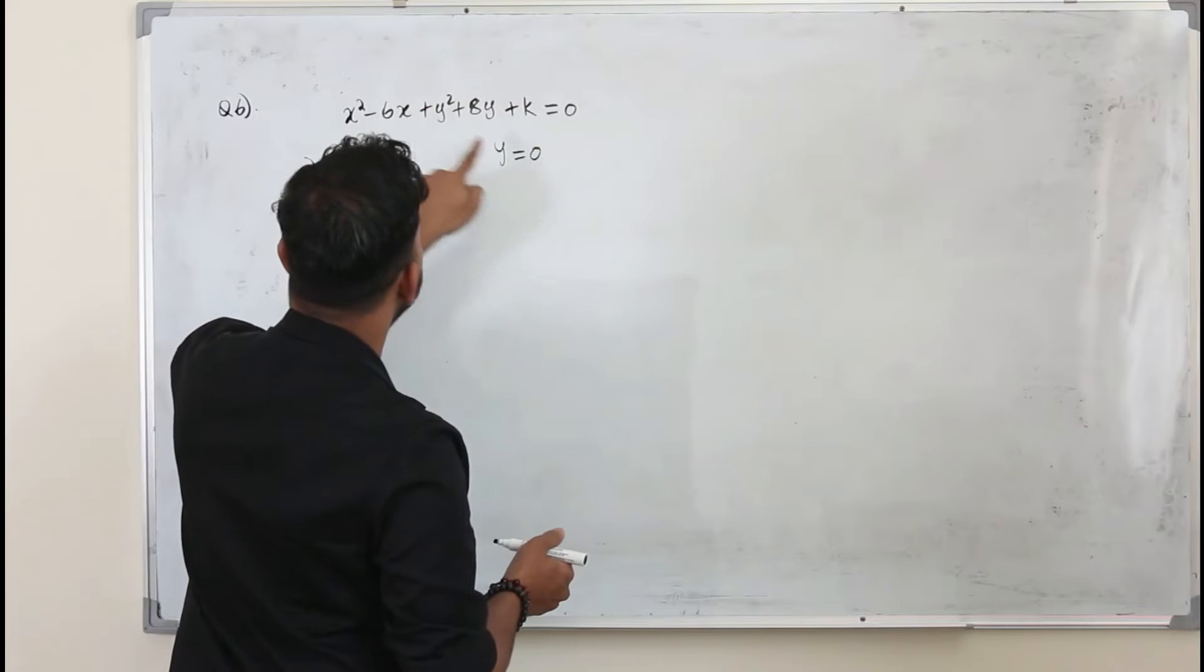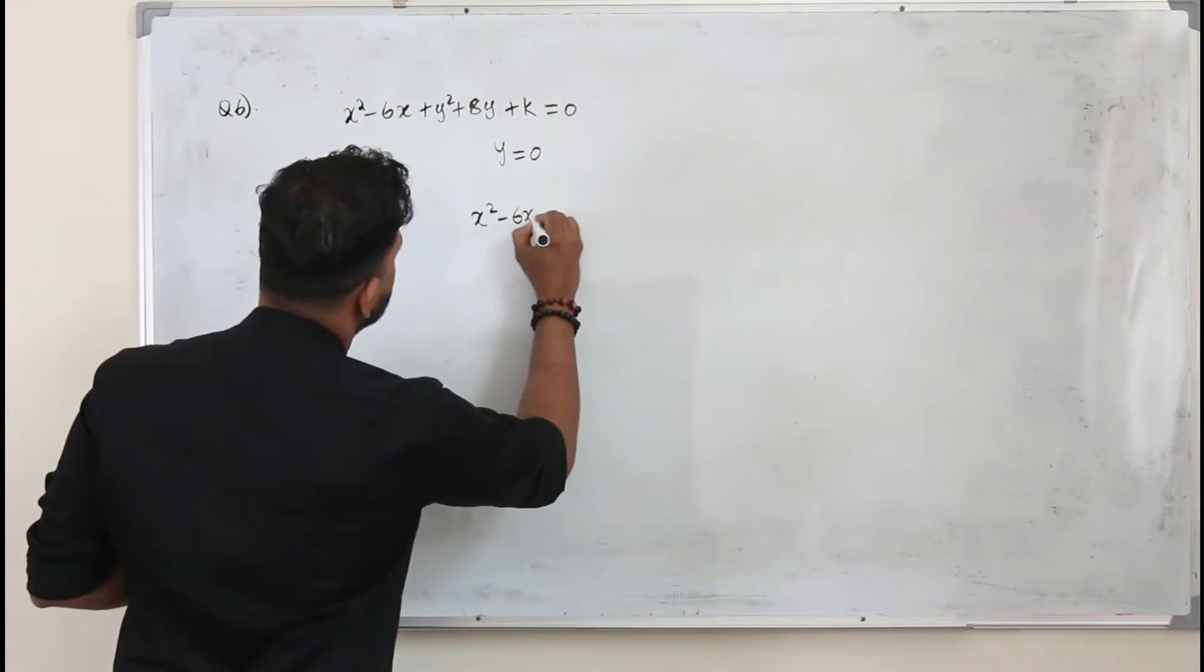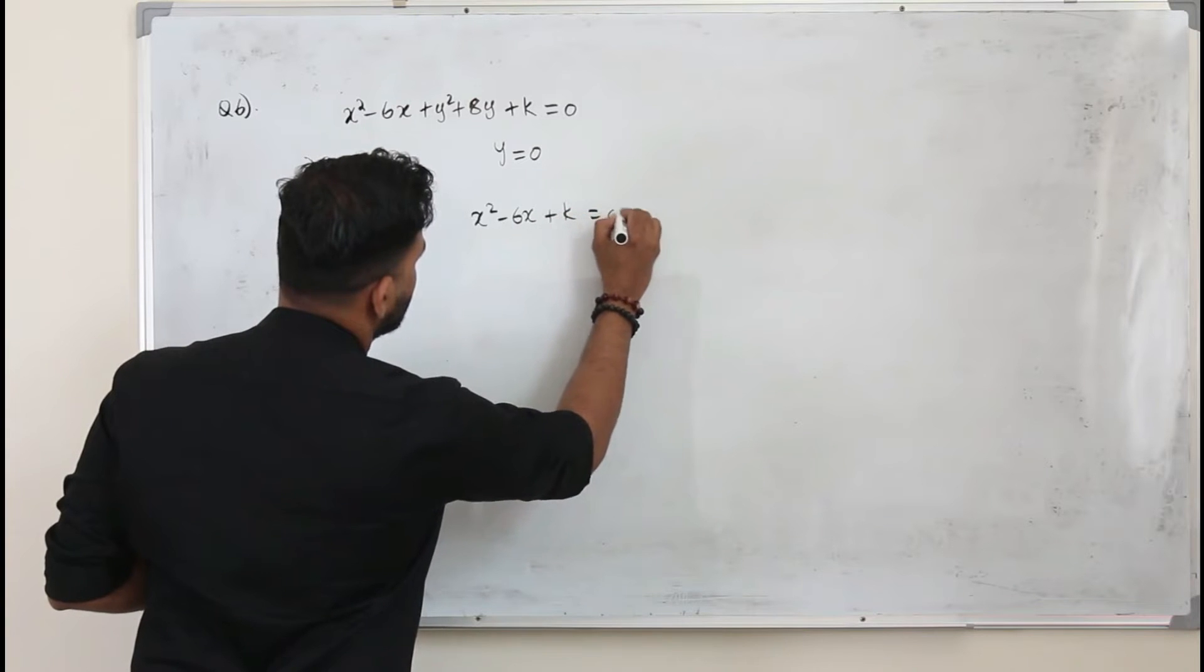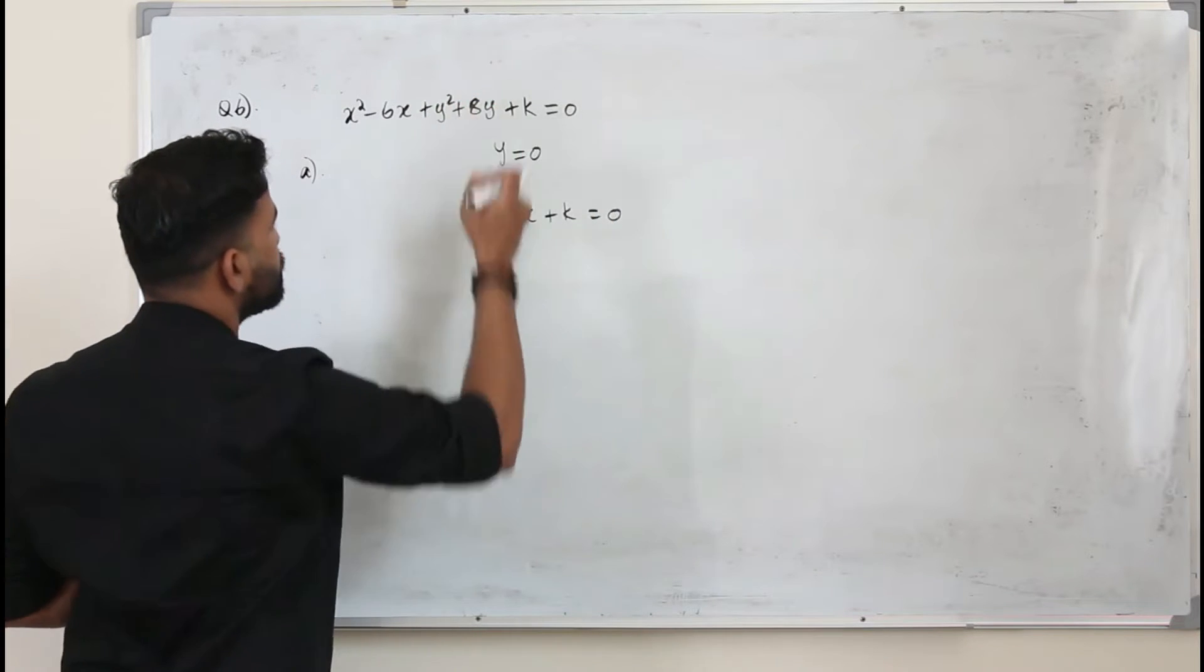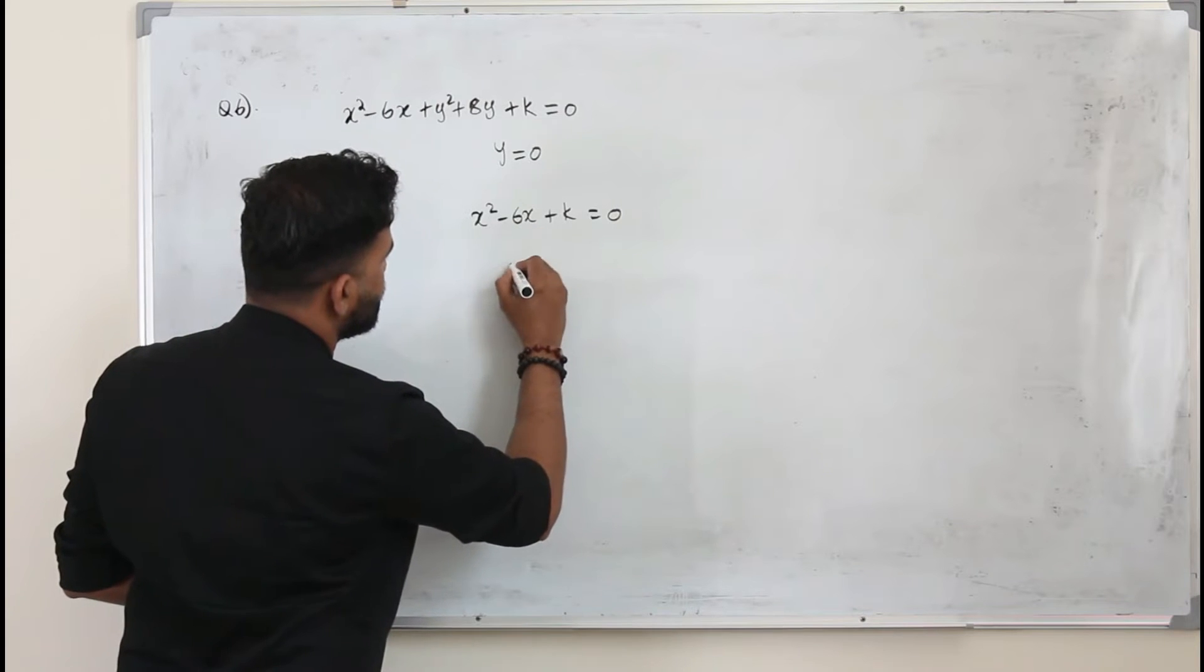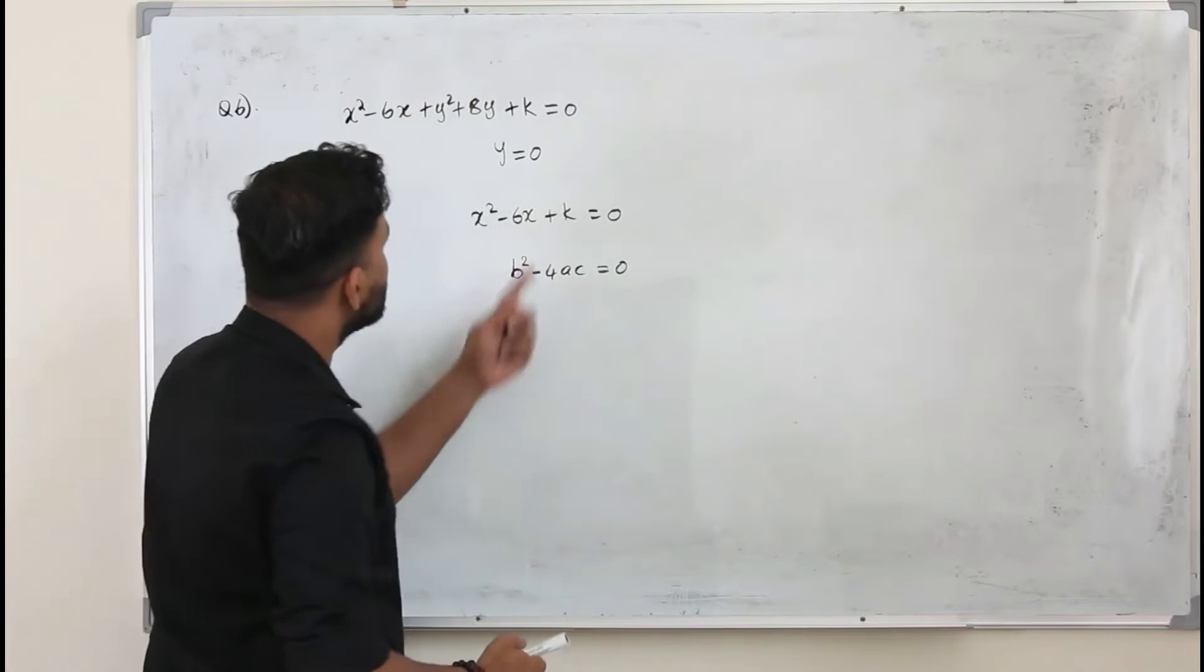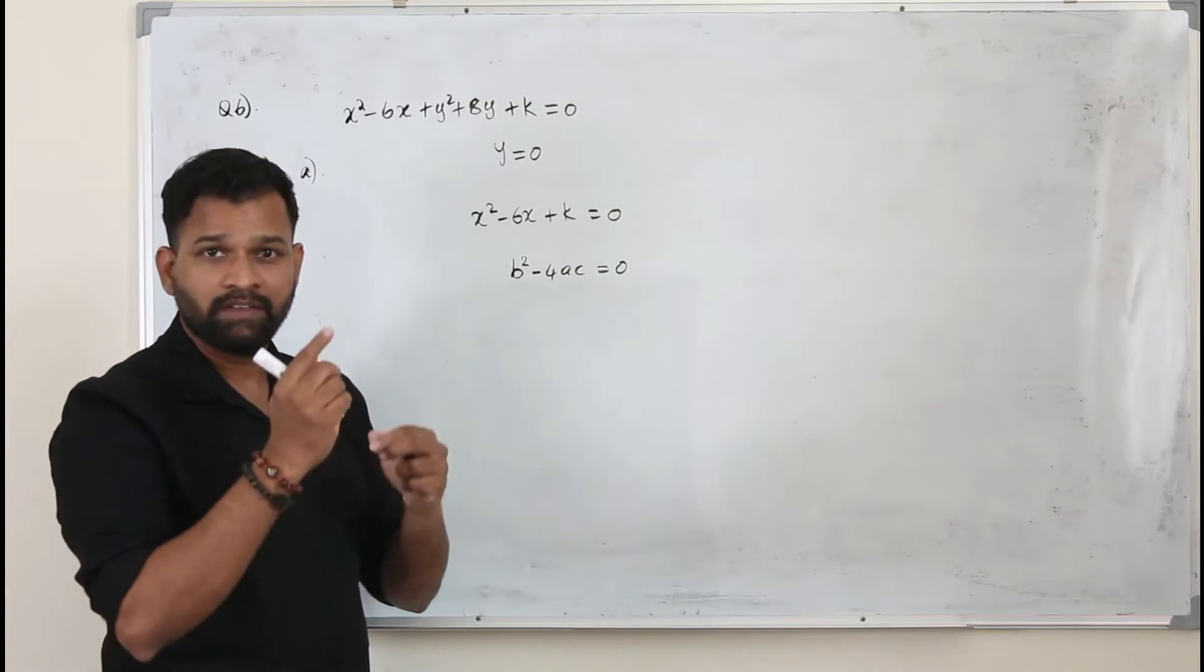So when you combine them, replace y by 0 here. So you get x squared minus 6x plus k equals 0, because automatically these two terms will be 0. And take the b squared minus 4ac, put it as equal to 0 because these two touch at a single point.